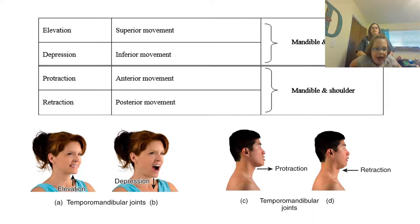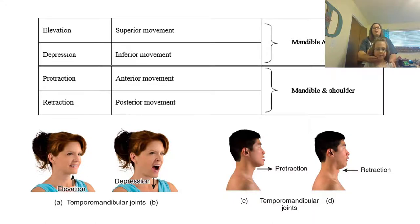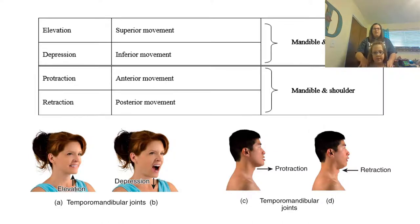Then we have some things that are special movements, mostly for your mandible, which is your jaw, and your shoulders. The first one is elevation — elevation is a superior movement, meaning up. This would be when you shrug your shoulders up to your ears. You can also elevate your jaw when you close your mouth completely. The opposite of elevation is an inferior movement called depression. When you bring your shrugged shoulders back down, that's depression. When you open your mouth, that is also depression.